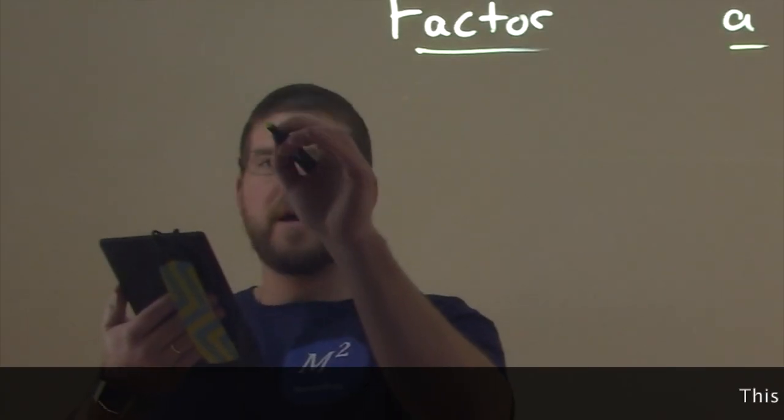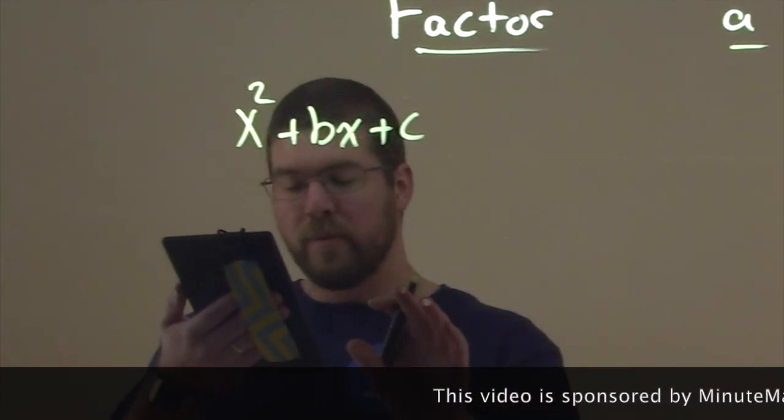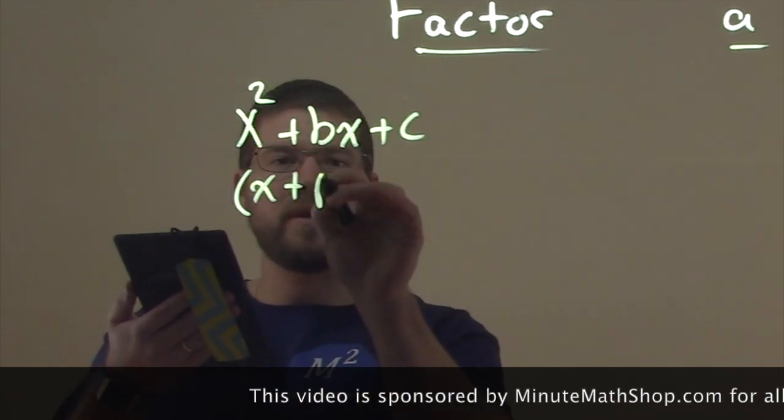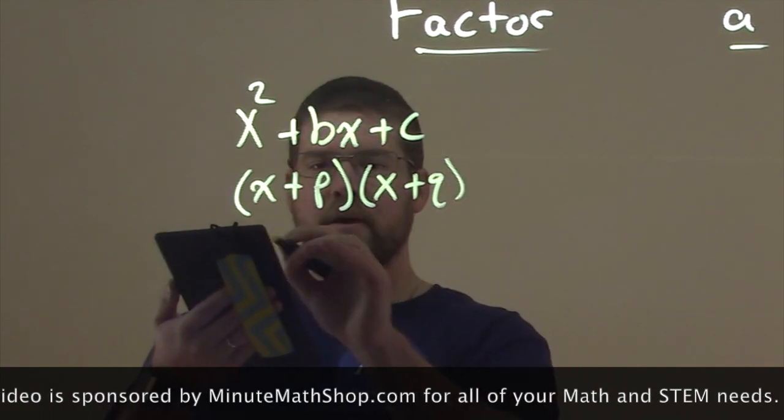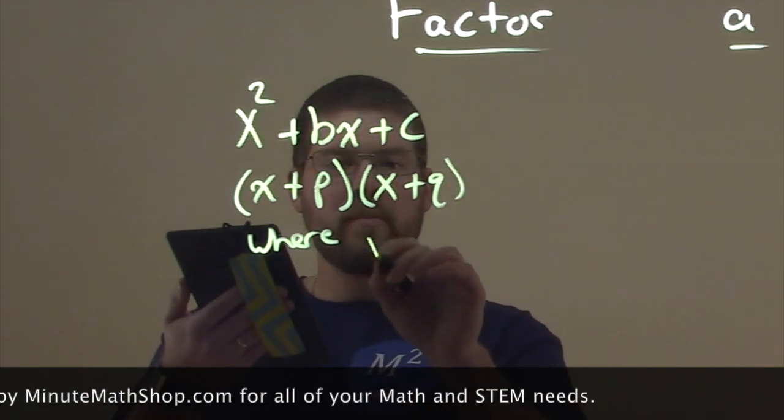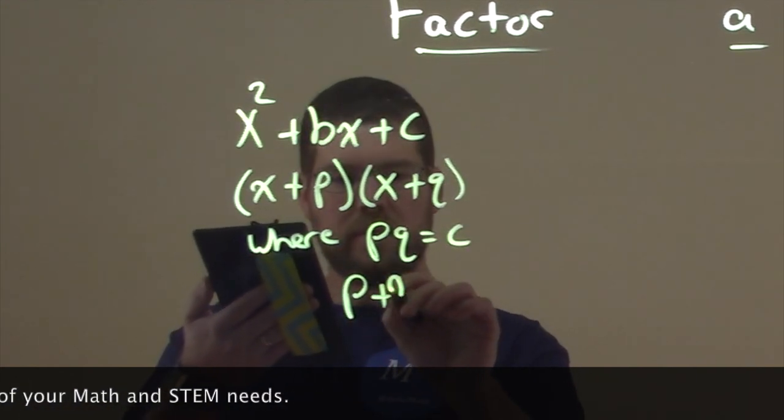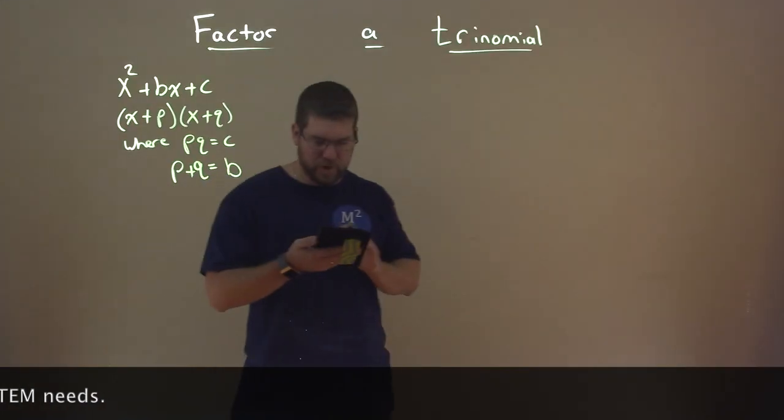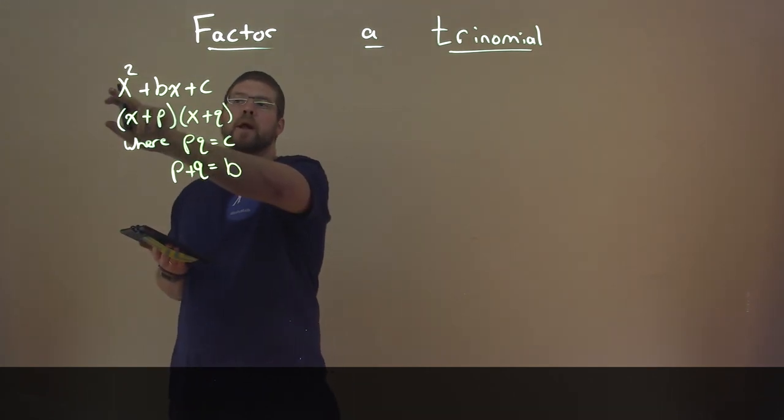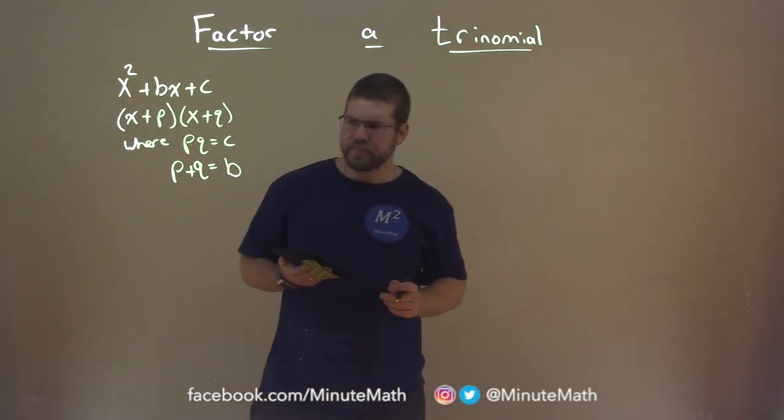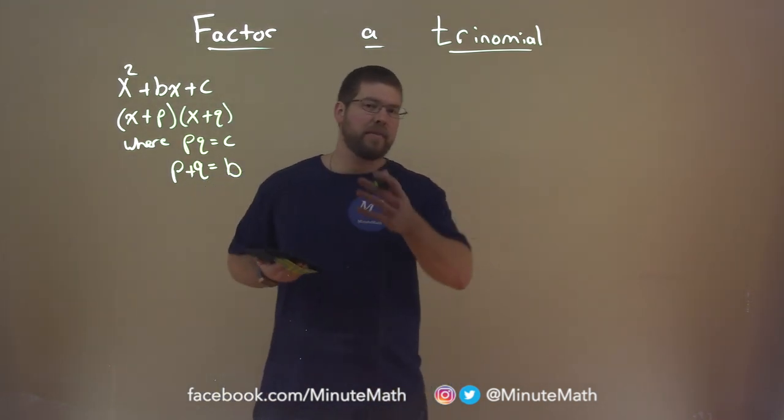So essentially we have this form, x squared plus bx plus c, and it can be factored into x plus p times x plus q, where pq equals c and p plus q equals b. This is a go-to with the coefficient being 1, the leading coefficient there. It's a good standard form, and I almost treat this as a game to try to figure it out.